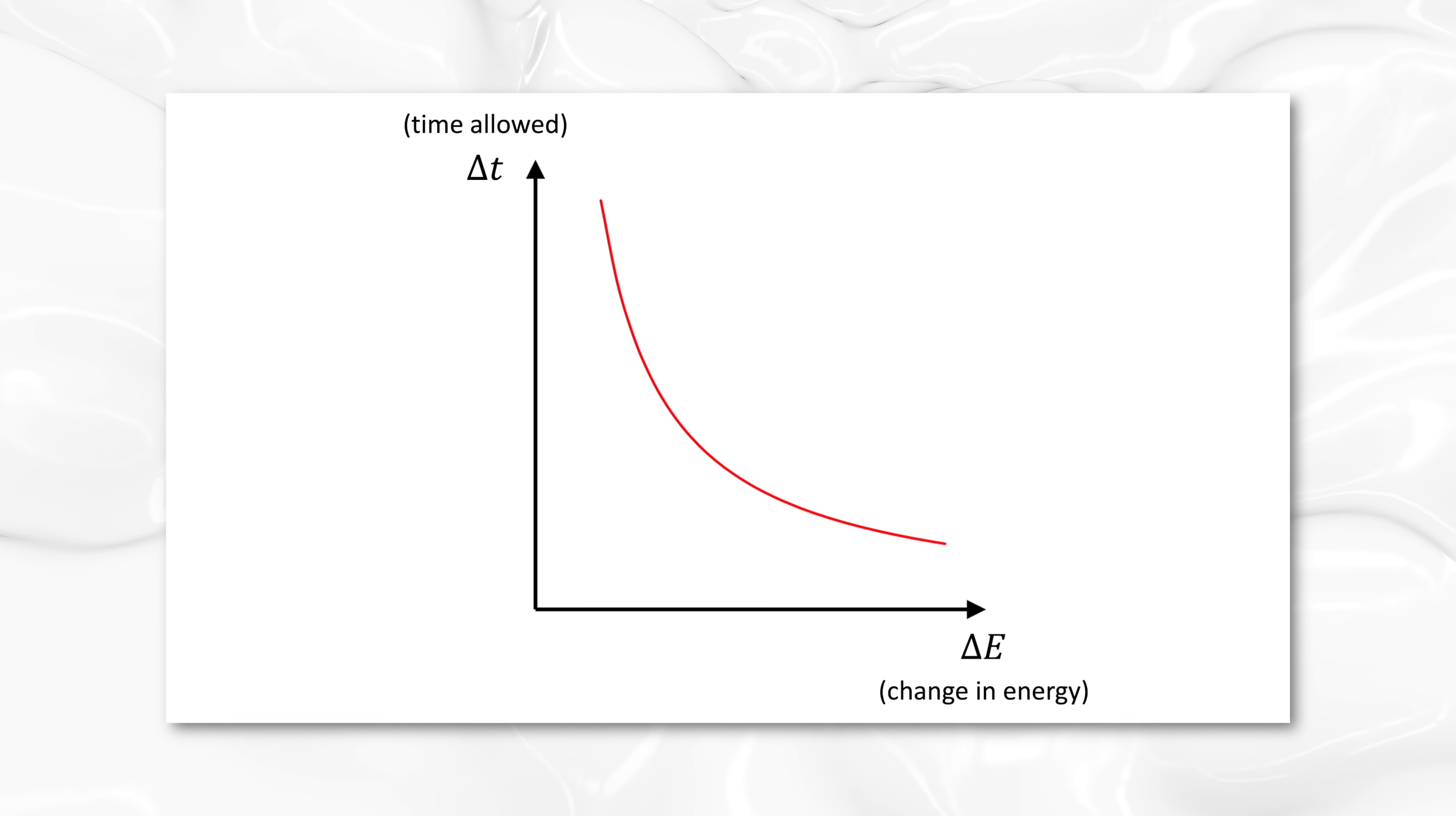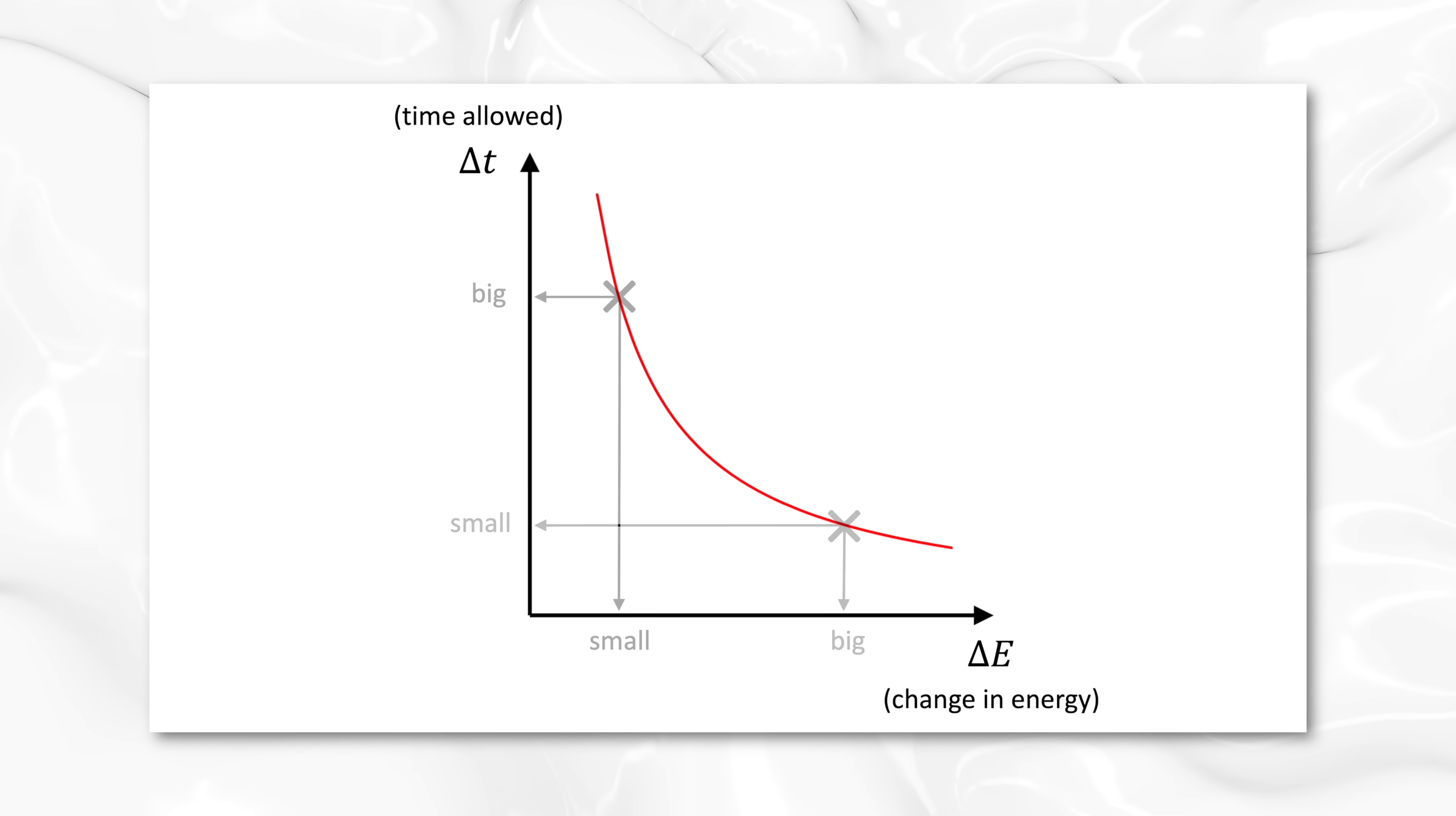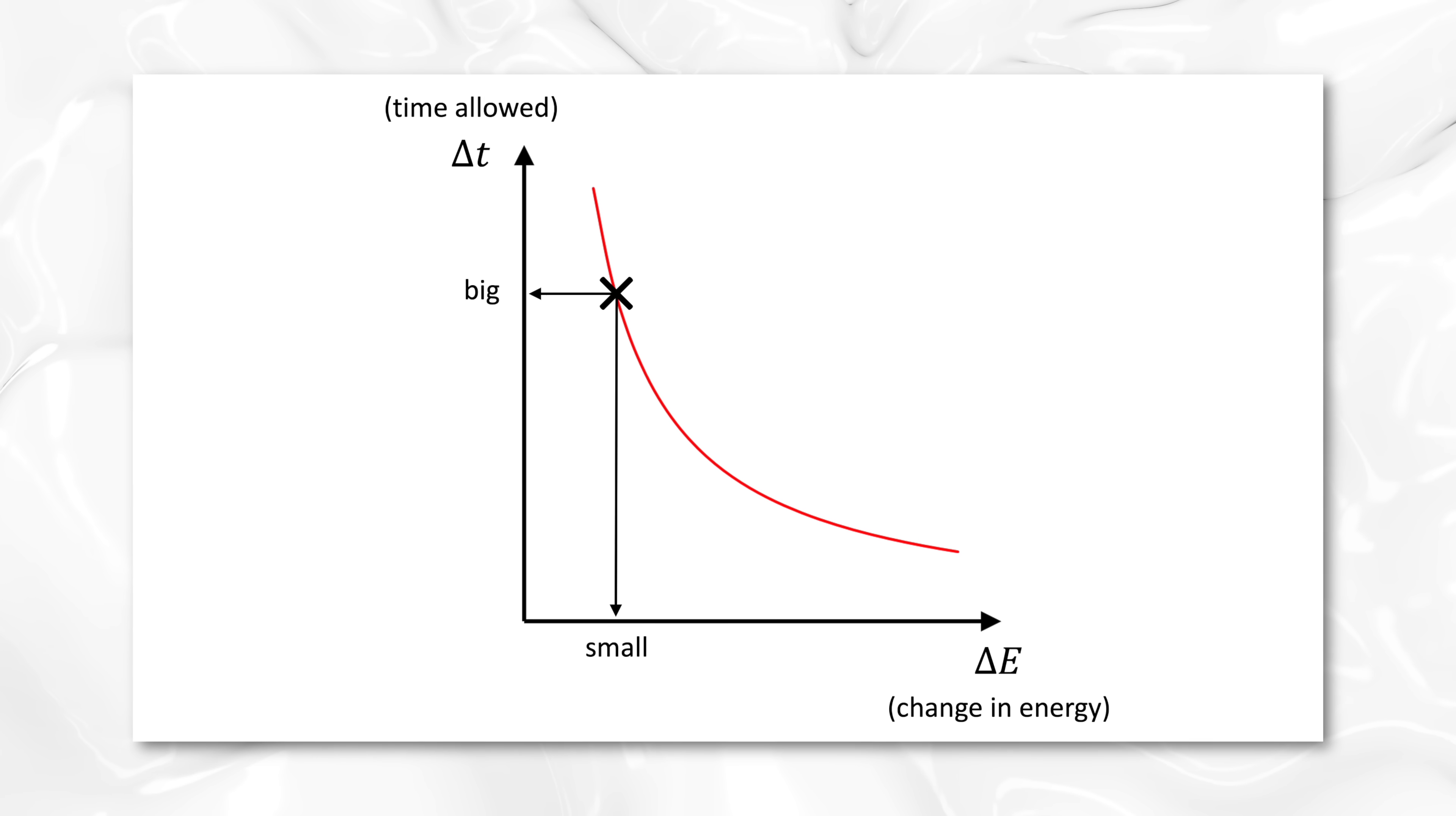The graph says it all. If a lot of energy appears, that can only happen for a very short time. If the amount of energy that appears is small, it can persist for a longer amount of time. Mind you, longer still means very short. You'll never see it with your eye.